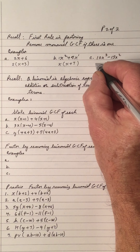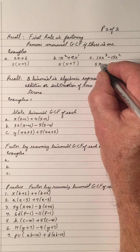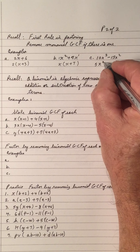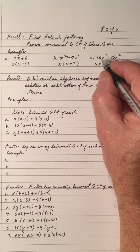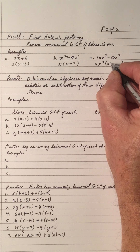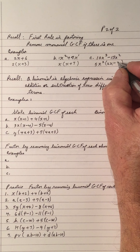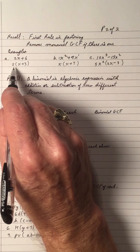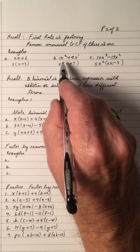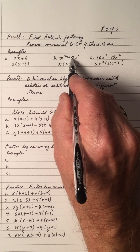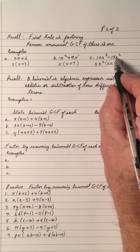In 10x cubed minus 15x squared, I see a GCF of 5, and x is common with the smallest exponent being 2. So: 10x cubed divided by 5x squared is 2x, and 15x squared divided by 5x squared gives 3 — leaving us with 5x squared times (2x minus 3). You can check by distributing: 5x squared times 2x is 10x cubed, and 5x squared times negative 3 is negative 15x squared.